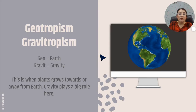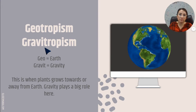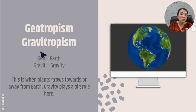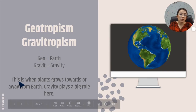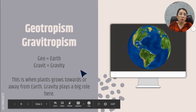Geotropism — there is another word for it, and you'll see both, so I want to teach you both. You will see geotropism, and sometimes you'll see gravitropism. They both talk about gravity. Geo means earth — think, there's gravity on earth. Gravit makes you automatically think of gravity. This is when the plant grows towards or away from earth based on gravity.